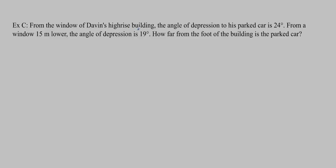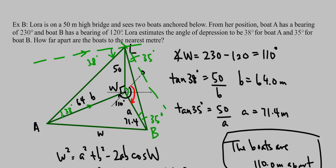From the window of Devon's high-rise building, the angle of depression to his parked car is 24 degrees. From a window of 15 meters lower, the angle of depression is 19 degrees. So how far from the foot of the building is the parked car? So this kind of question is actually pretty challenging and it's a very different type of question from the other two. You can see that in our other two diagrams, we get a sort of pyramid-looking thing with the 90 degrees in it. And you can see that we get one here as well.